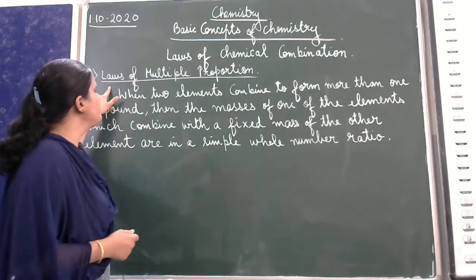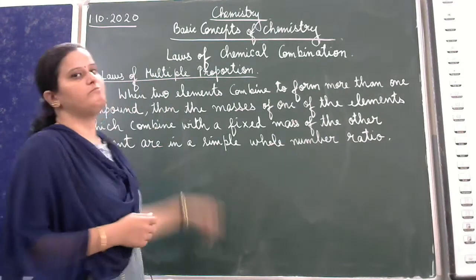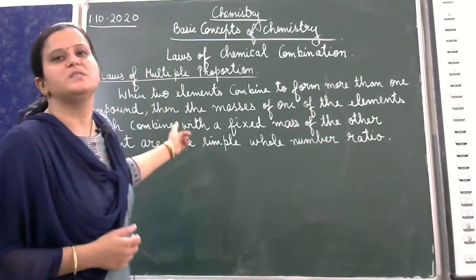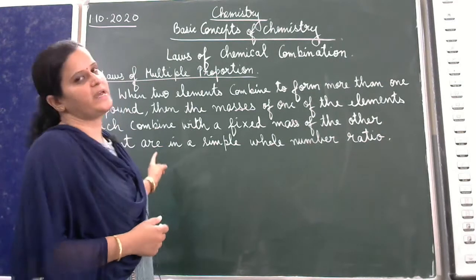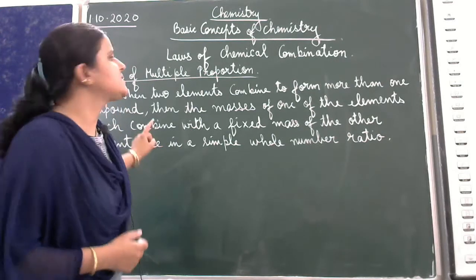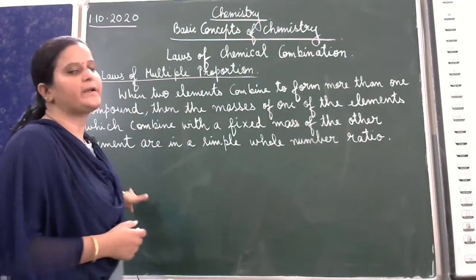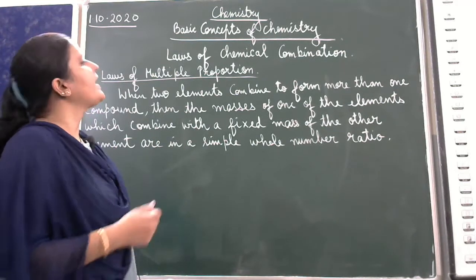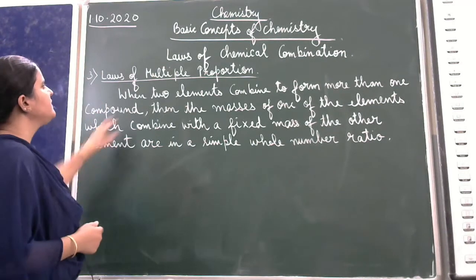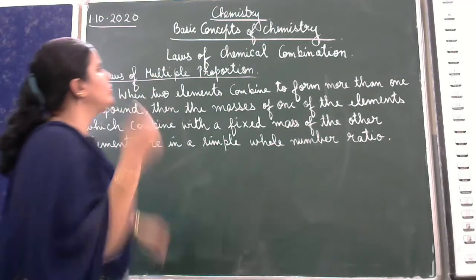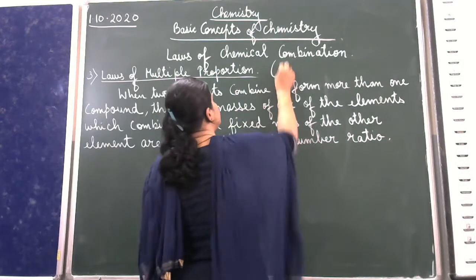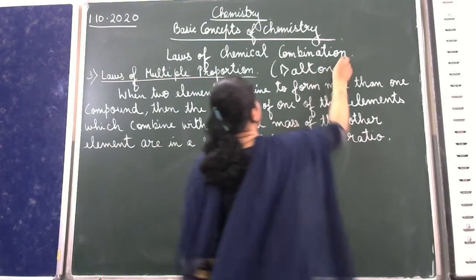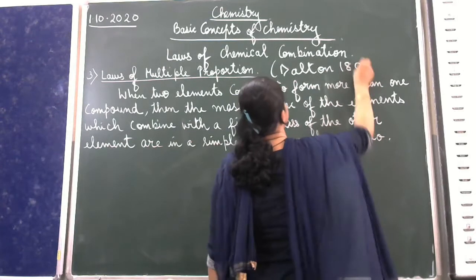That is the third law — the law of multiple proportion. This law was given to us by Dalton in 1803. Let us read the statement and then I will explain.